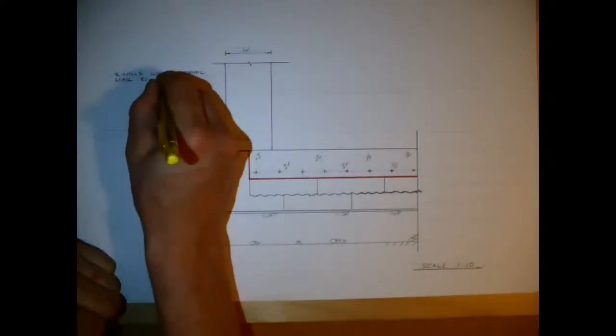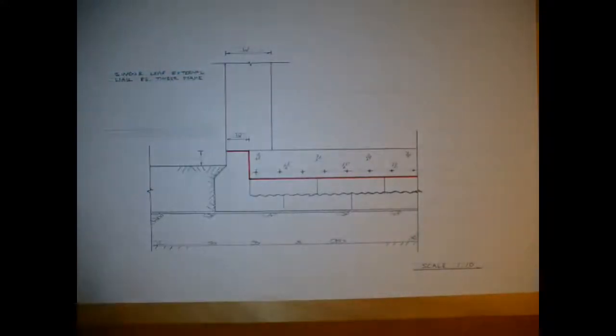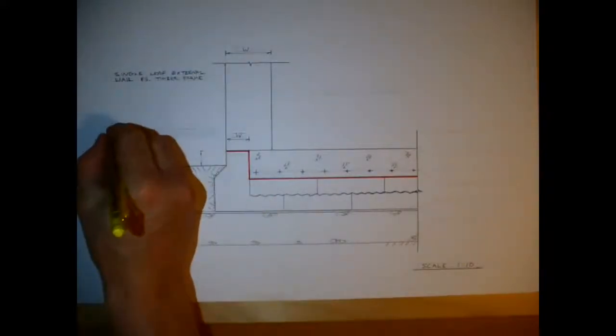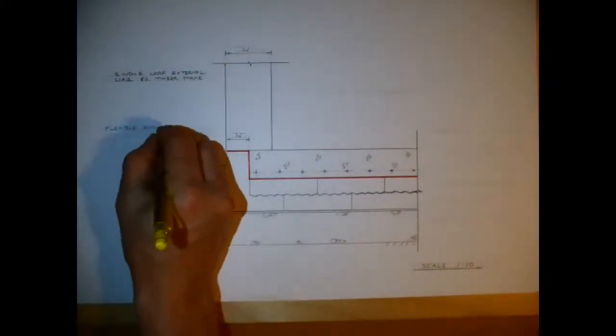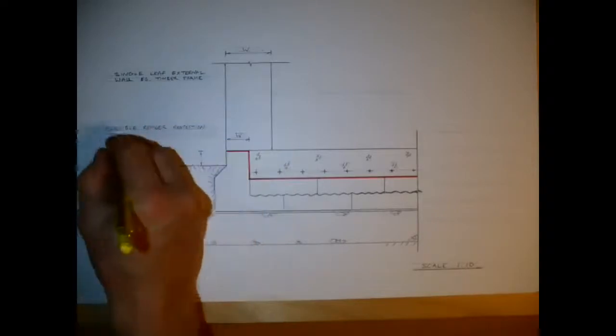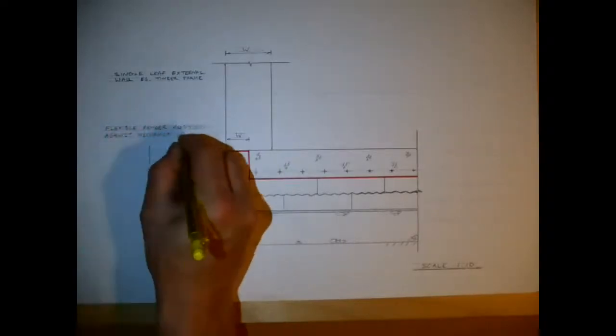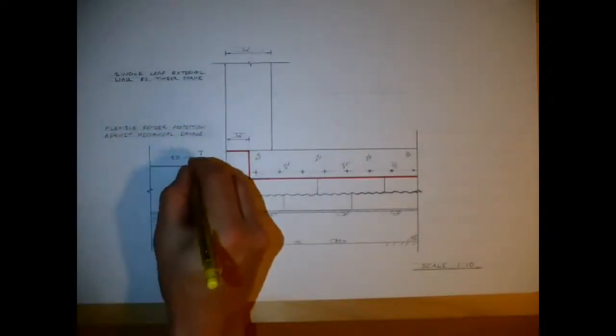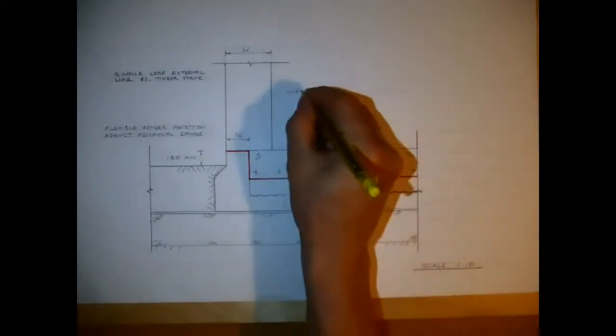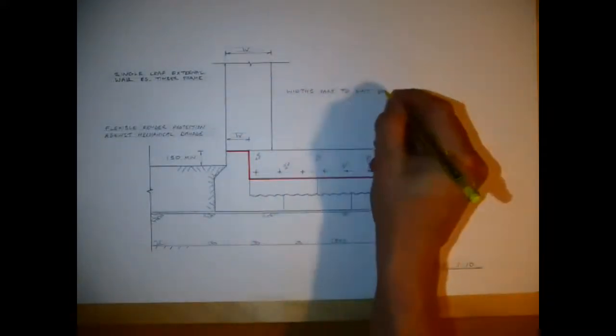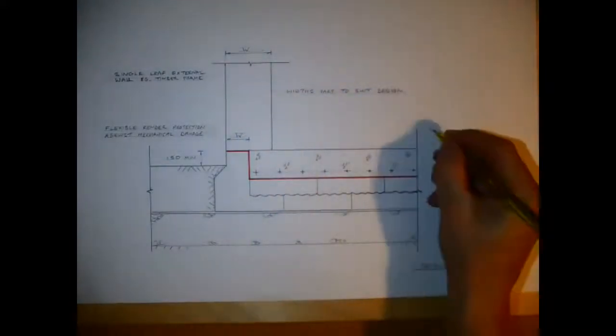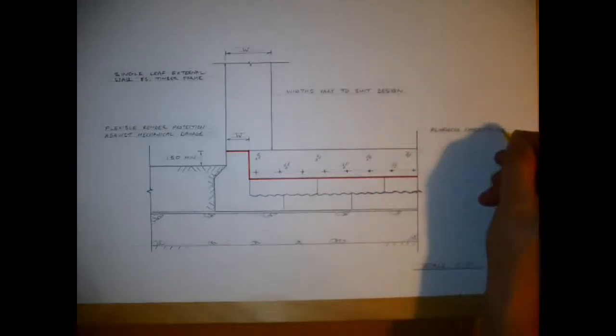So then just the details: single leaf external wall, for example timber frame, flexible render which is placed on the outside of the EPS, which the concrete slab has been poured just to prevent any mechanical damage. The width of the wall may vary depending on the design.